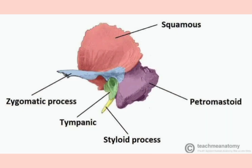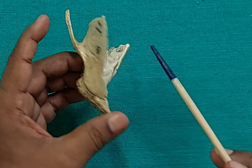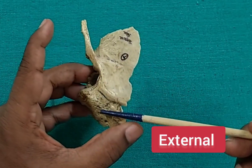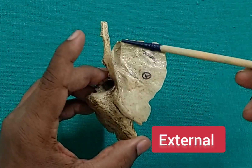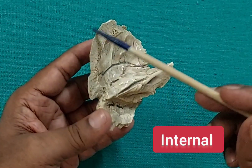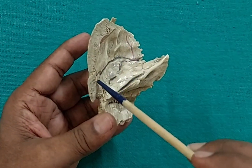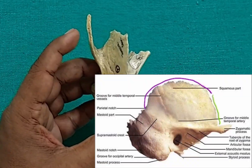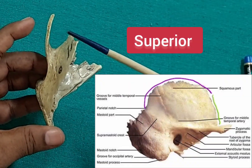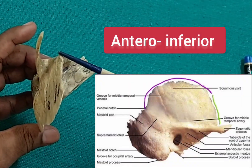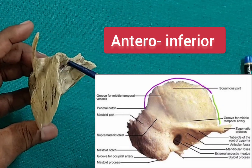I will show you in another bone. First of all, let's come to the squamous part. This is having two surfaces: one is the external surface, also called the temporal surface, and the internal surface, also called the cerebral surface, and two borders — one is the superior border and another one is the antero-inferior border.